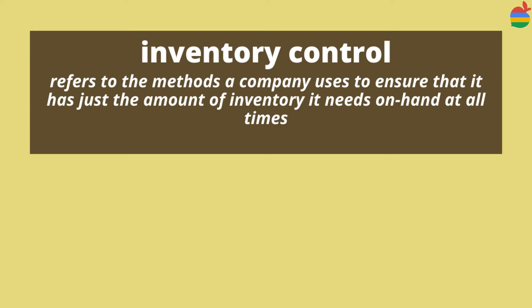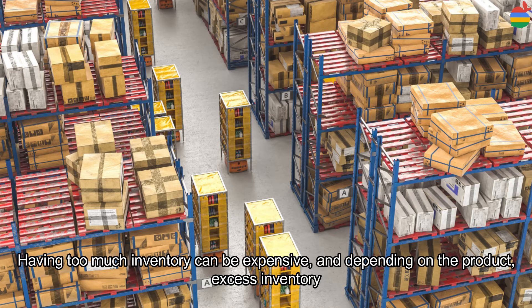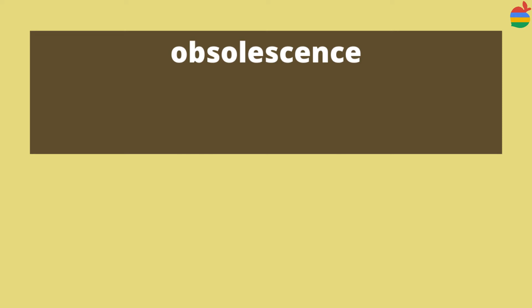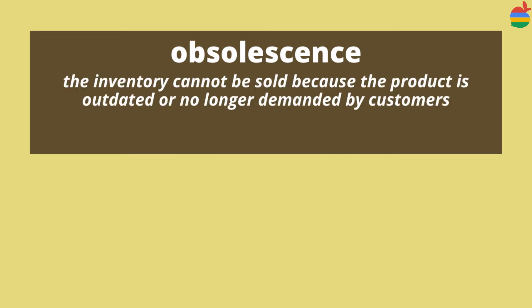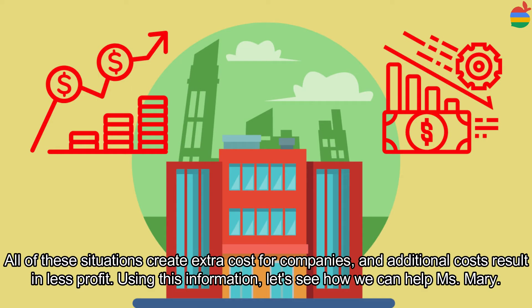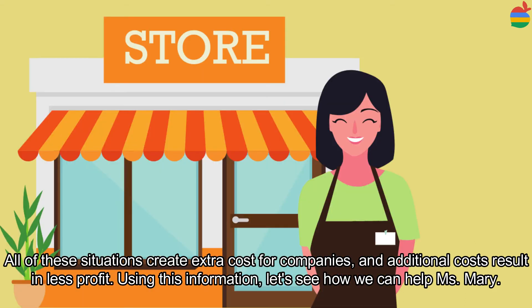Inventory control refers to the methods a company uses to ensure that it has just the right amount of inventory it needs on hand at all times. Having too much inventory can be expensive, and depending on the products, excess inventory can result in spoilage or even obsolescence — which means that the inventory cannot be sold because the product is outdated or no longer demanded by customers. All of these situations create extra costs for companies, and additional costs result in less profit.